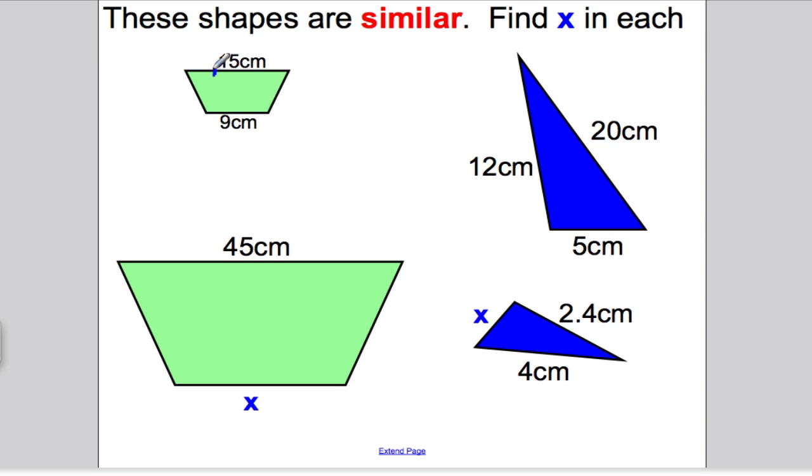Now, we know they're similar, so their lengths are related in some way. This length here, the equivalent length on this shape is this one. What's the scale factor? Well, the scale factor is 45 divided by 15, which is 3. That means I times each of the lengths on the small one by 3, and I get the lengths on the new one. So this one here, X must be 9 times 3, which is 27 centimetres. Simple as that.